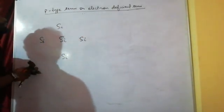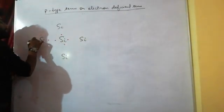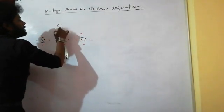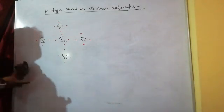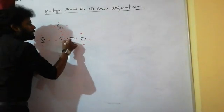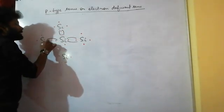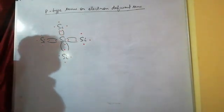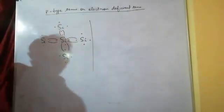Silicon has 4 valence electrons: 1, 2, 3, 4. This is a crystal of silicon forming covalent bonds. This is a covalent bond.